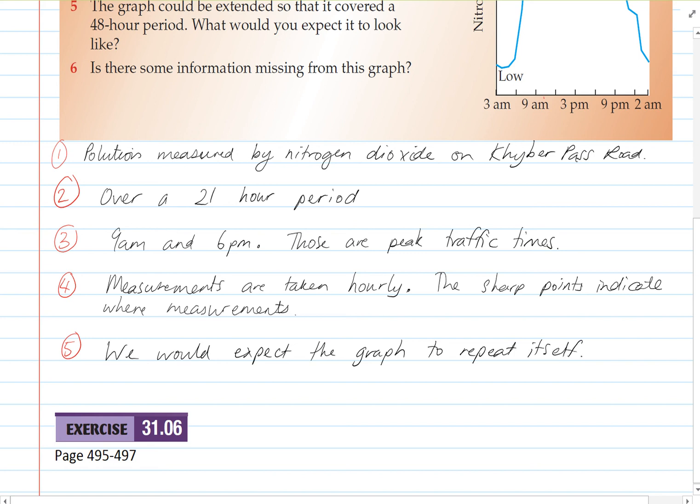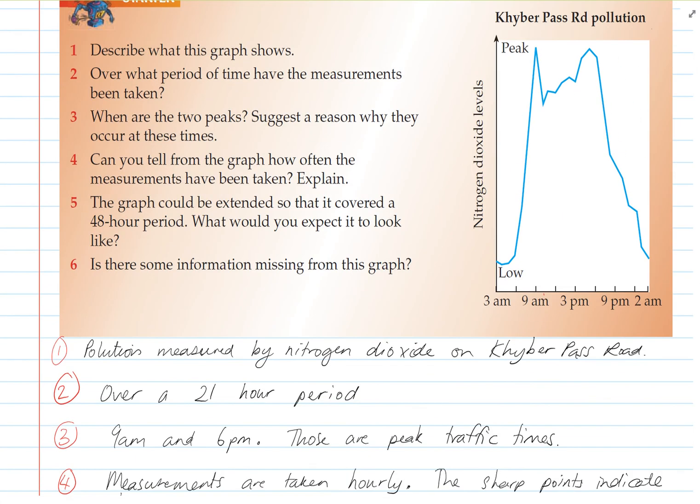Okay, finally, the last question, six, is there any information missing from the graph? Well, I don't see any explanation down here about that being time from anything in particular. However, we also don't see any units for the nitrogen dioxide levels.